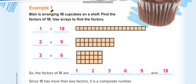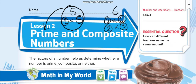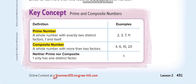If you want to arrange something — for example, 18 cupcakes — you find the factor pairs of your total to discover all the ways you can arrange them. Now, a prime number is any number that has one factor pair or two factors: one and itself. A composite number has more than one factor pair or more than two factors.